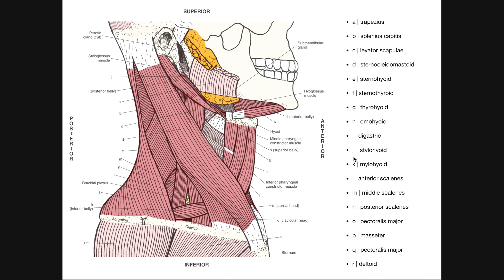Muscle J is stylohyoid — that's this thin muscle right here. Right beneath the external acoustic meatus and a little bit anterior, we have the styloid process of the skull. The origin of the stylohyoid is on the styloid process, and as we follow it down, it inserts on the hyoid — so stylohyoid.